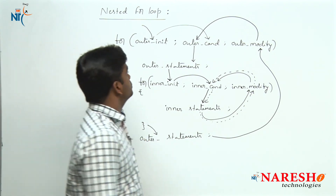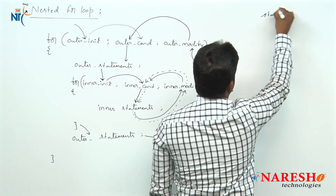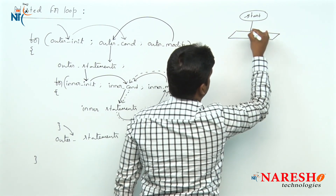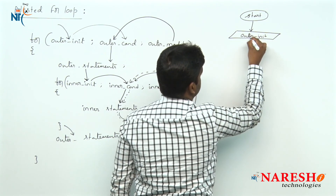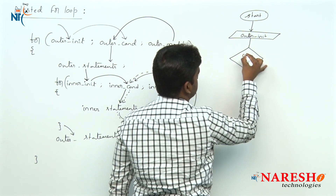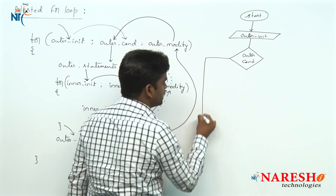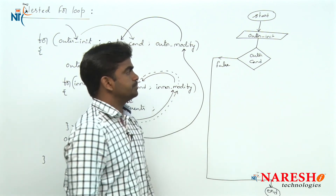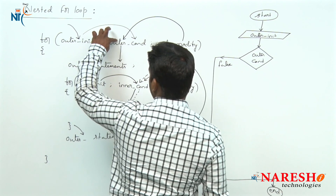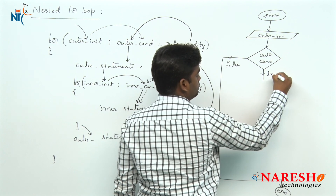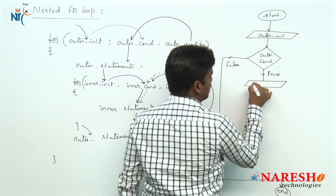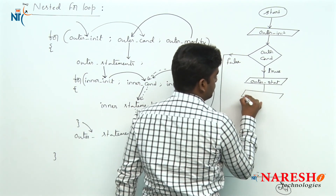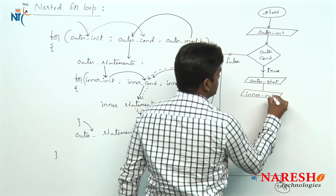Now see the flowchart — how the flow will be. First of all, it will start. Then outer initialization, and then it checks the outer condition. If outer condition is false, directly it will terminate the flow and come to end. If outer condition is true, outer statements execute. After outer statements execution, the inner initialization statement executes.